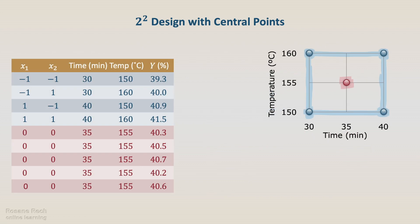The table shows the coded and the natural variables of the 2 to the power of 2 design ran as a single replicate, the central point that was run with 5 replicates, and the resulting yield.